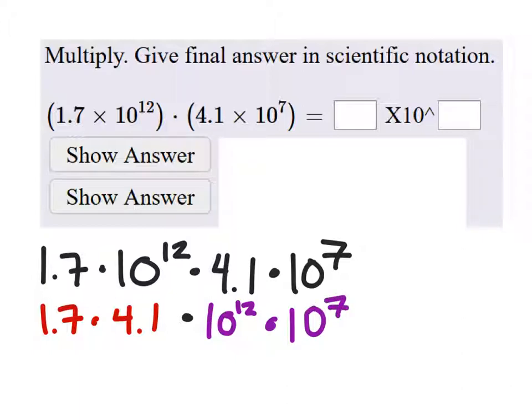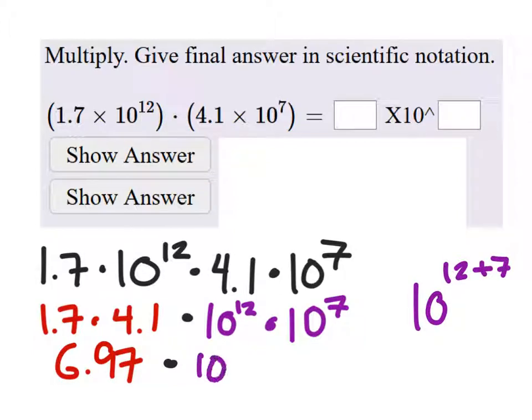And 1.7 times 4.1, this is what I got. And the 10s, we have the same basis, so this is really 10 to the power of 12 plus 7, which would be 10 to the power of 19. And that would be good.